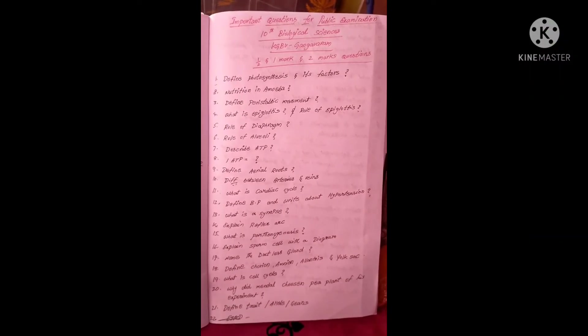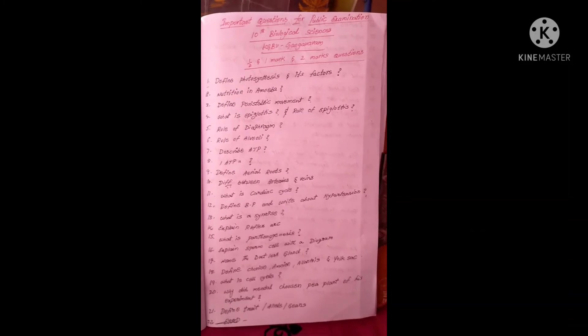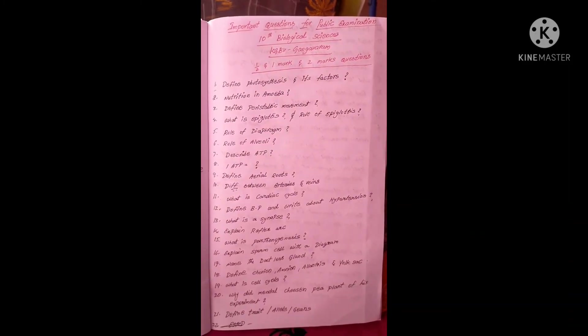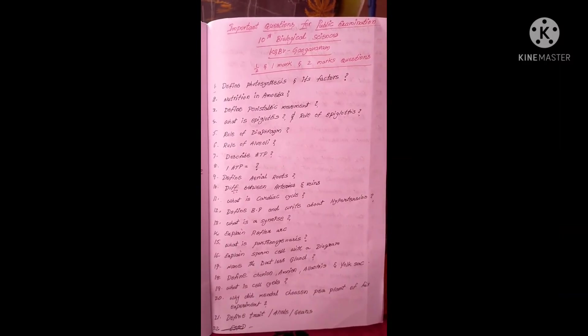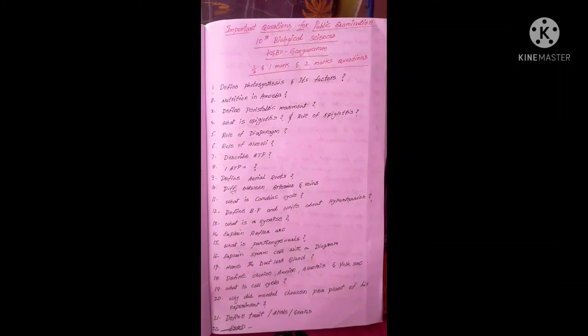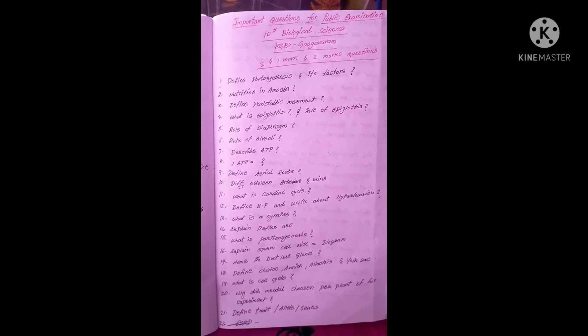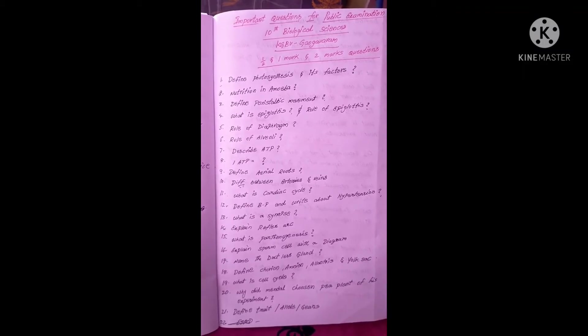Now let us discuss some important questions from our textbook for well preparation of the public examination. I am going to first explain the half-mark, one-mark, and two-mark questions. The first question is: define photosynthesis and its factors.